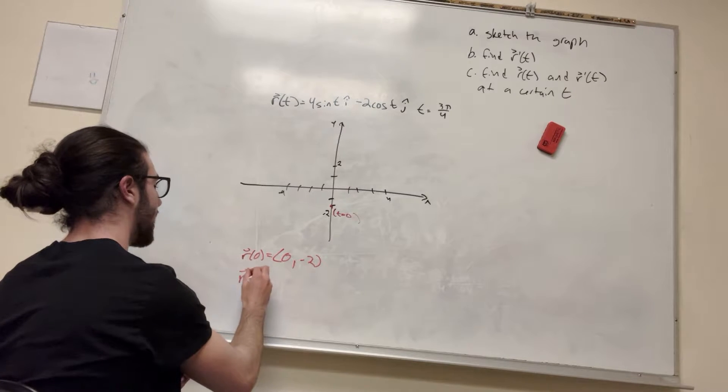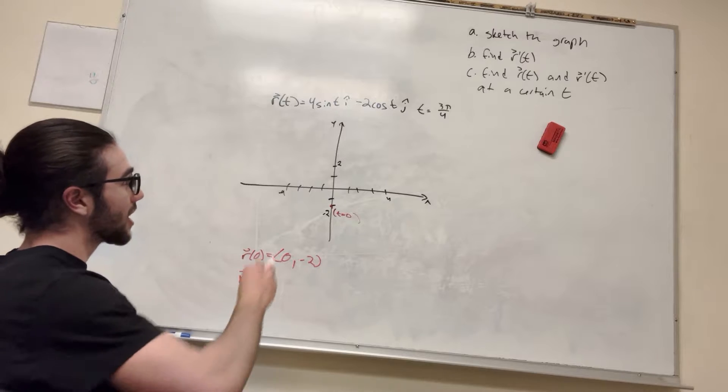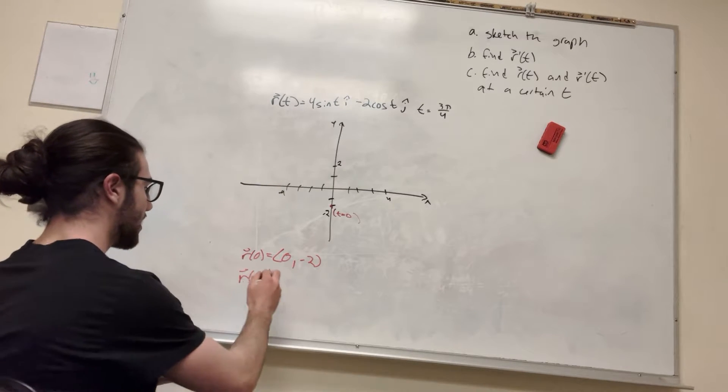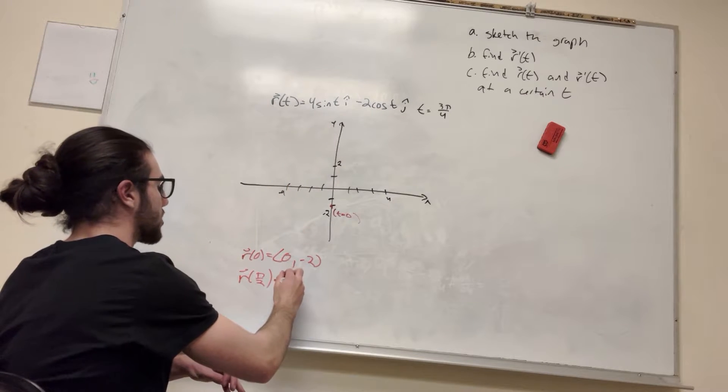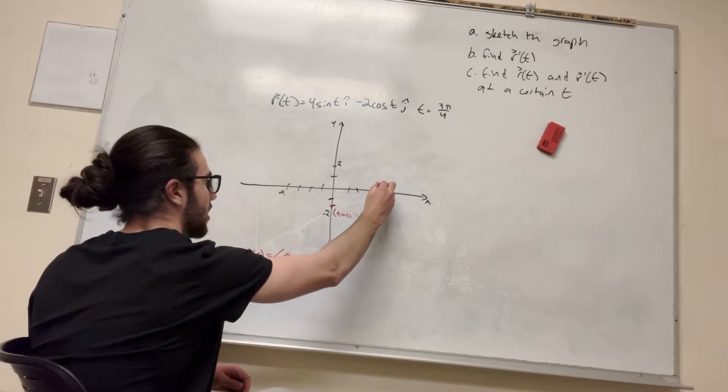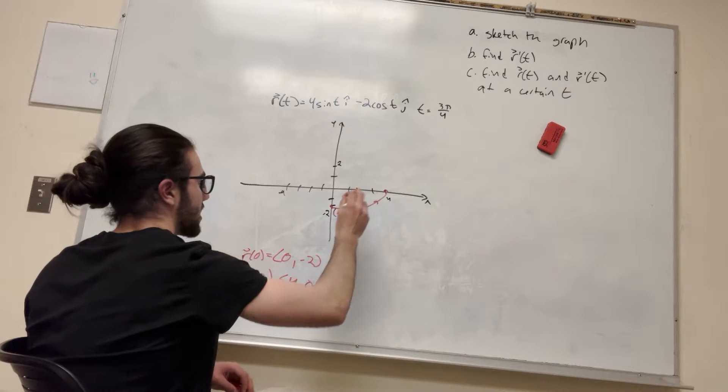Alright, so let's try r of π over 2, because we're working in a coordinate plane that's cosine and sine, so you want to work in cool, nice, even terms of π. So this is going to be equal to, so sine of π over 2 is 1, so it's going to be 4, and cosine of π over 2 is 0, so boom. So it goes up to here, and you can tell it's going to kind of go in this way, and you can plug in more intermediate numbers to find out exactly how that works.